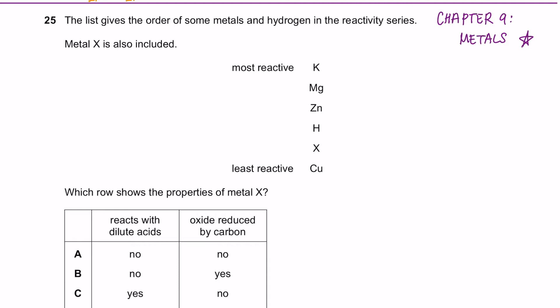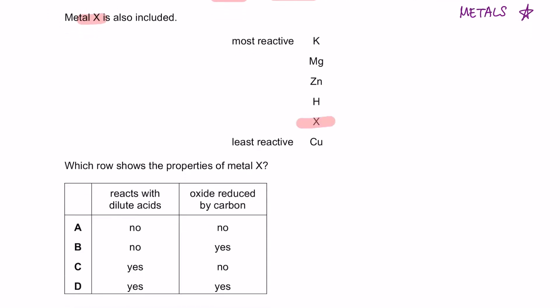Question 25 onwards is from chapter 9. The list gives the order of some metals and hydrogen in the reactivity series. Metal X is also included. You have metal X in between hydrogen and copper. Which row shows the properties of metal X?